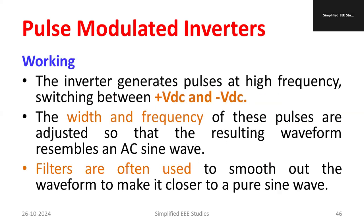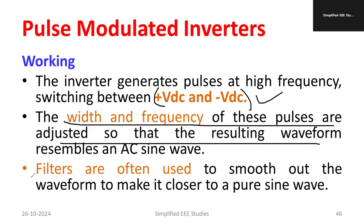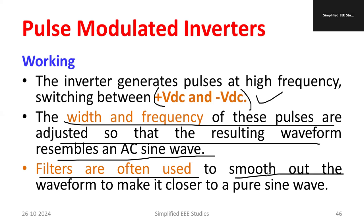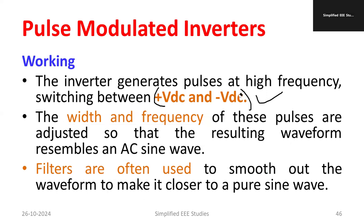The inverter generates pulses at high frequency. The switching frequency is very high, lying between +VDC and −VDC. The width and frequency of these pulses are adjusted so that the resulting waveform is similar to an AC sine wave, with on and off periods adjusted to obtain an output voltage similar to a sinusoidal waveform. Filters are commonly used to remove noise and unwanted signals, making the waveform much closer to a pure sine wave, so the harmonic content is comparatively less.